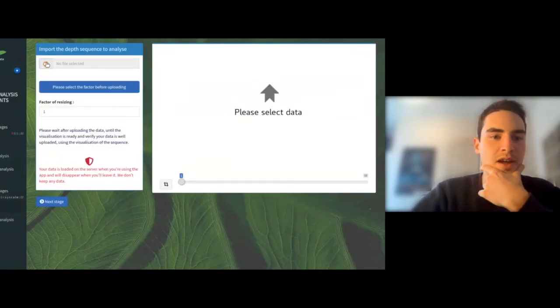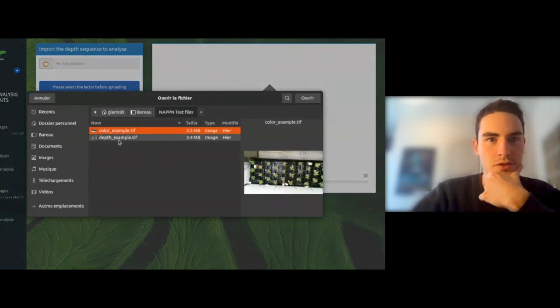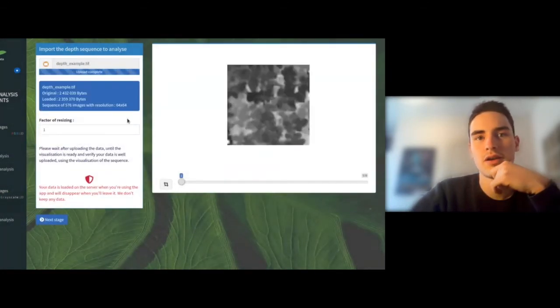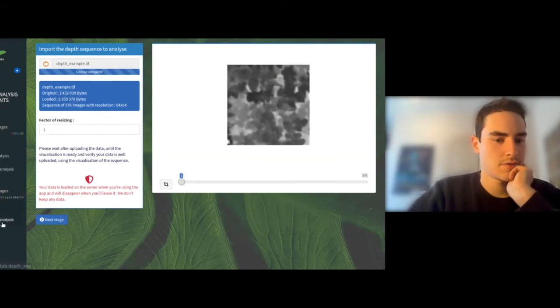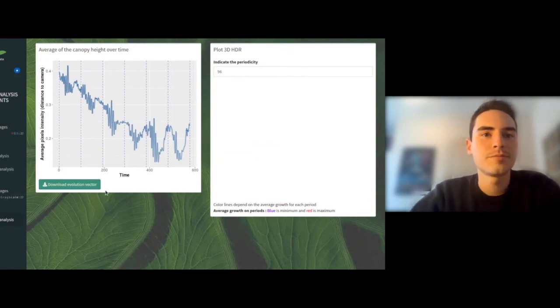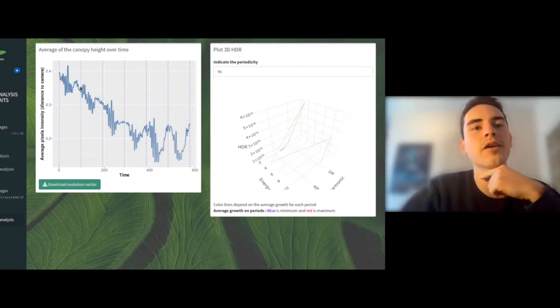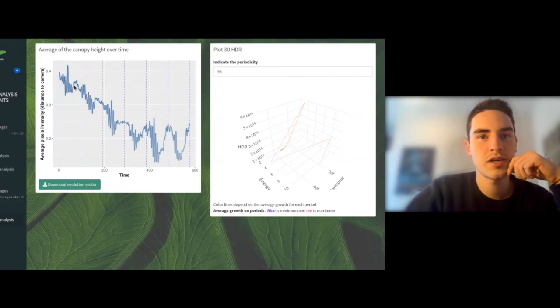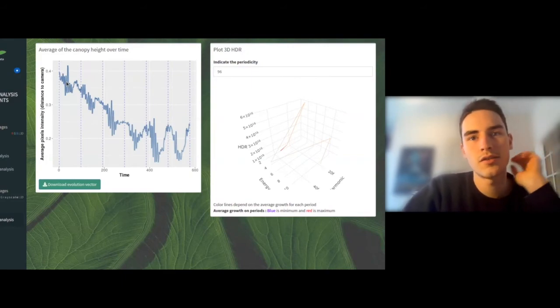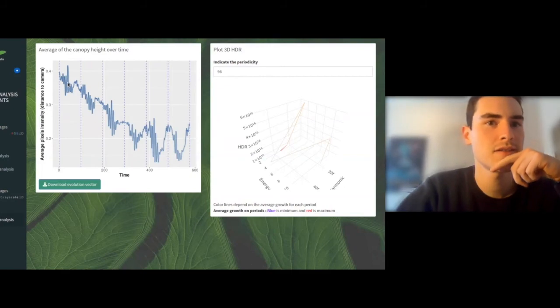Okay, so we can now move to the depth images. Here we have a canopy of hydrangeas in top view. We can go to the next step and the plot we can see on the left side of the screen represents the evolution of the average distance to the camera. And as David said previously, we can see period by period the trend, the circadian patterns, and the higher frequency patterns.